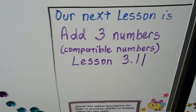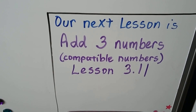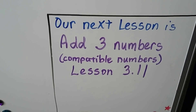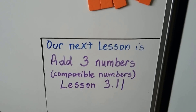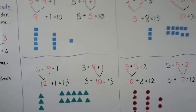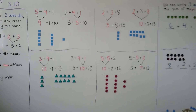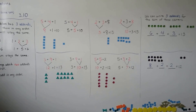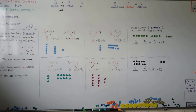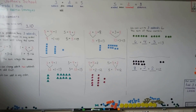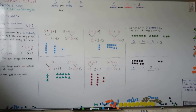Our next lesson we're going to talk about adding 3 numbers and compatible numbers where we can make 10s or doubles. That's lesson 3.11. I hope the video was helpful. Now you know we can add in any order — just like adding 2 add-ins, we could do that with 3 add-ins, or even 4 add-ins. It doesn't matter — the sum will stay the same. Have a great day and I'll see you next video.